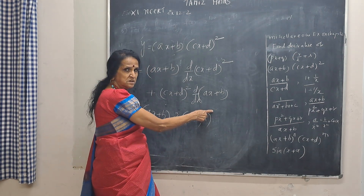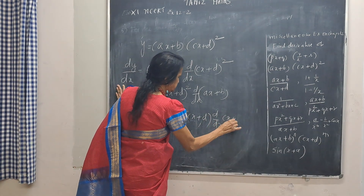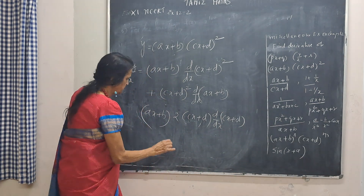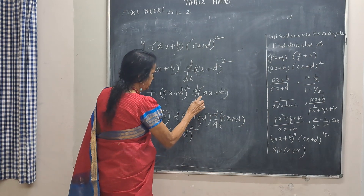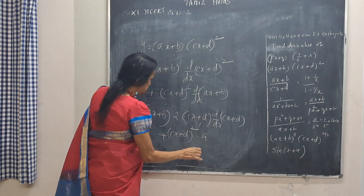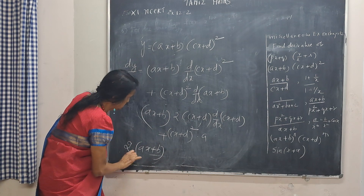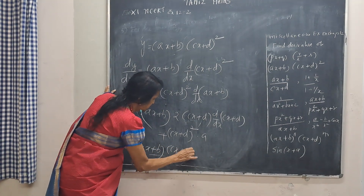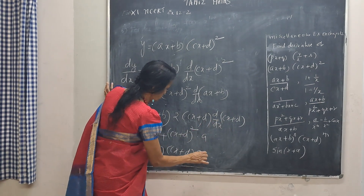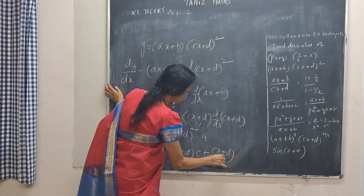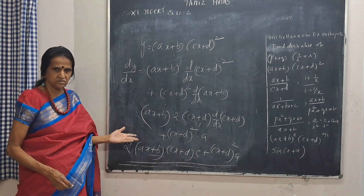Using x^n and chain rule, derivative of (cx + d)² is 2(cx + d)^1 followed by derivative of (cx + d), which is C. Plus (cx + d)² into derivative of (ax + b), which is A. So dy/dx equals 2AC(ax + b)(cx + d) plus A(cx + d)². This is the answer. You can multiply and simplify further if you want.